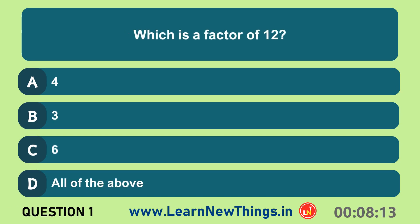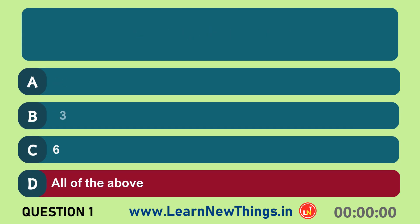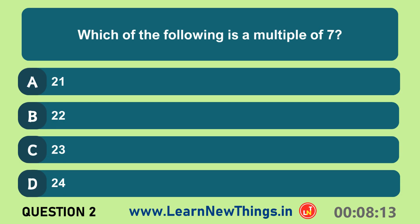Which is a factor of twelve? All of the above. Which of the following is a multiple of seven? Twenty-one.